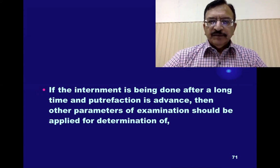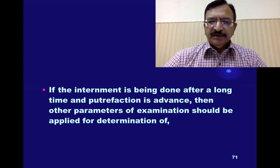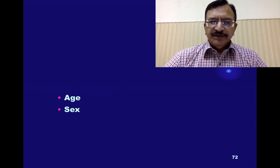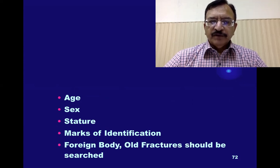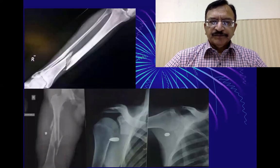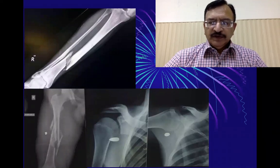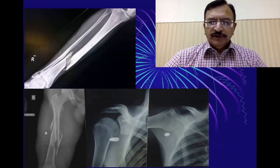If the internment is after a long time and putrefaction is advanced, then other parameters of examination should be applied for determination of age, sex, stature, and marks of identification if available. Any foreign body or old fracture should be searched. If a portable x-ray is available, you can take x-rays to find out fractures or foreign bodies like bullets.